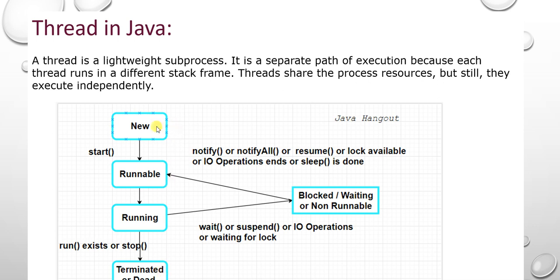For example, new state — new state is whenever we create the object of the Thread class, that is called new state. It is not ready yet. Once we call the start method on the Thread object, it will come to runnable state. It is not running at that point — the thread is handed over to the Thread scheduler. The scheduler decides how to run and how much time it will run — those things are taken care of by the Thread scheduler, depending upon the operating system.